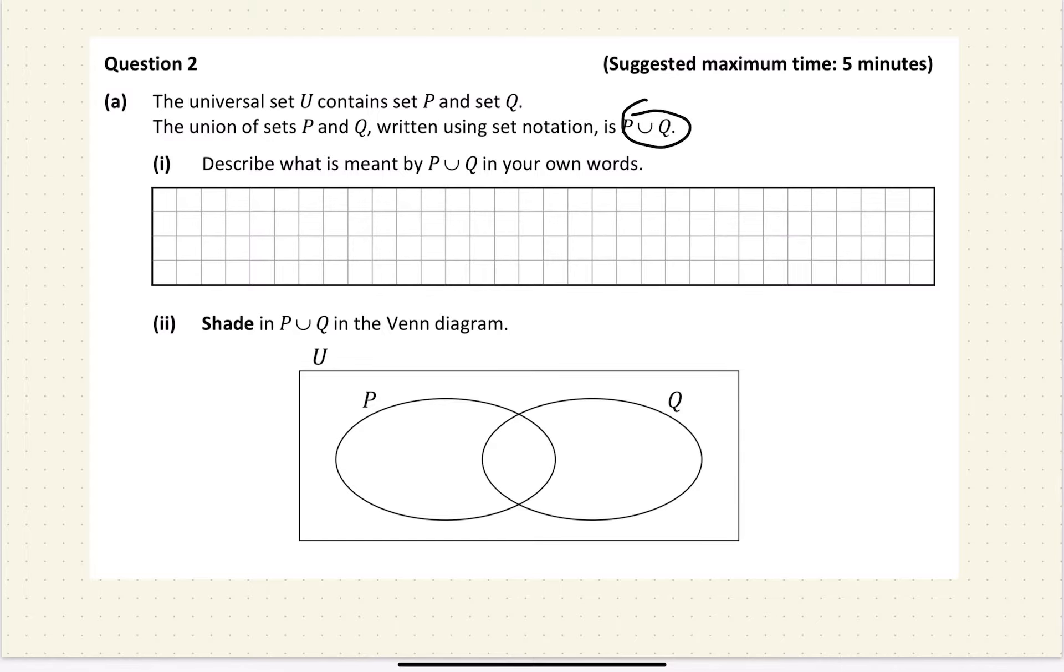Describe what is meant by P union Q in your own words. What I would write here is it is a set that includes all the elements in A and in B.